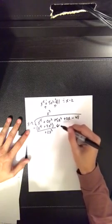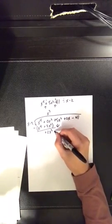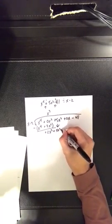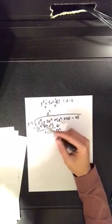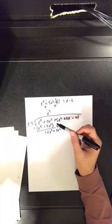Then you bring your 5 down, and that would be plus 5x squared. Then you just repeat that all the way down.